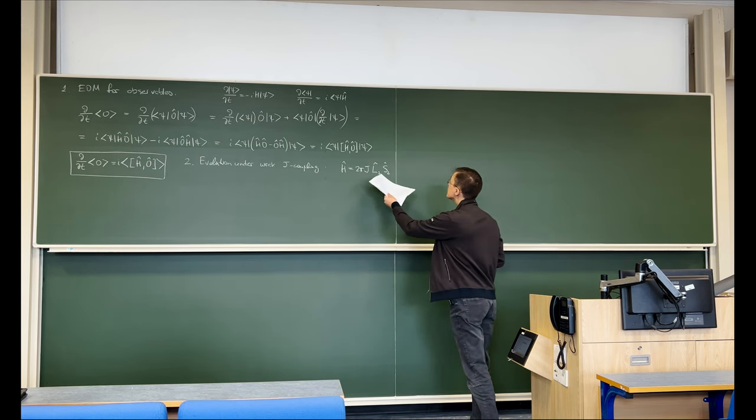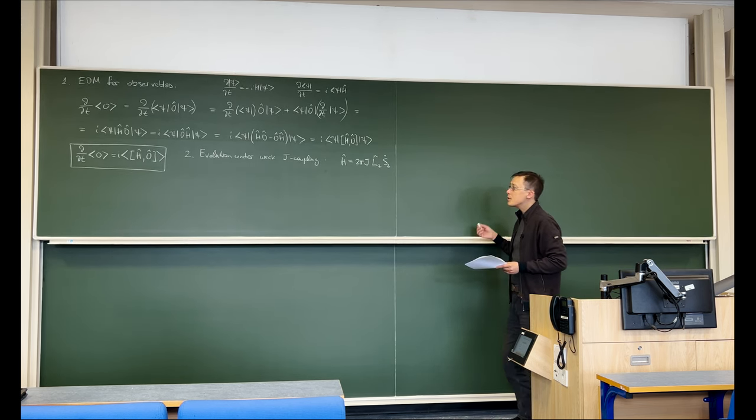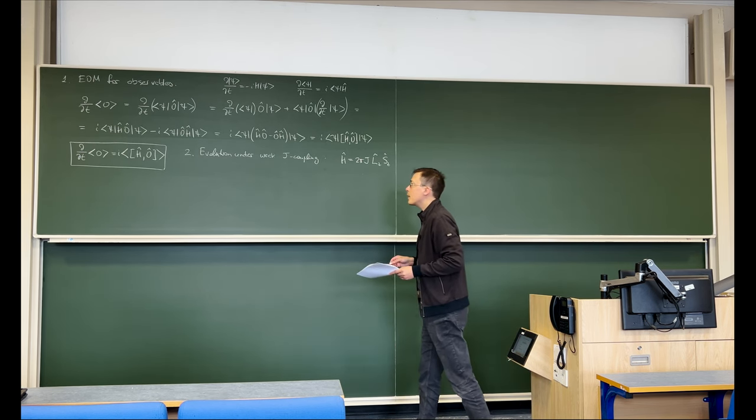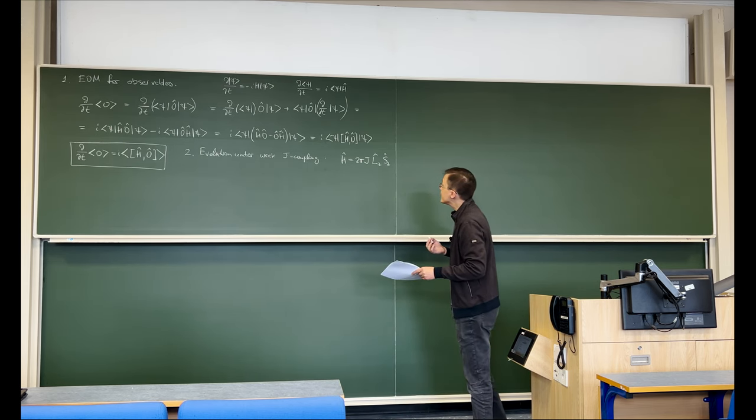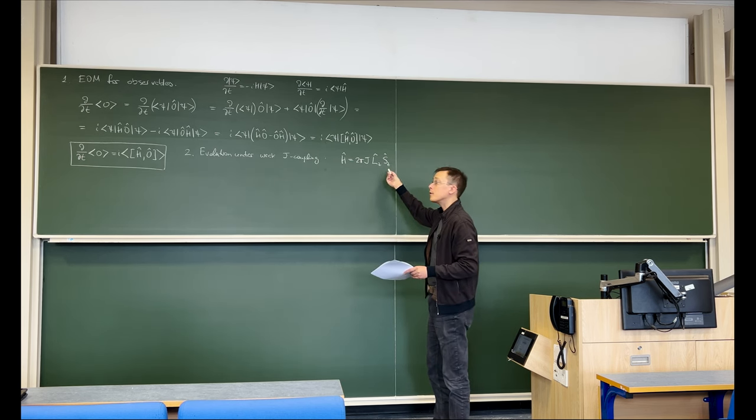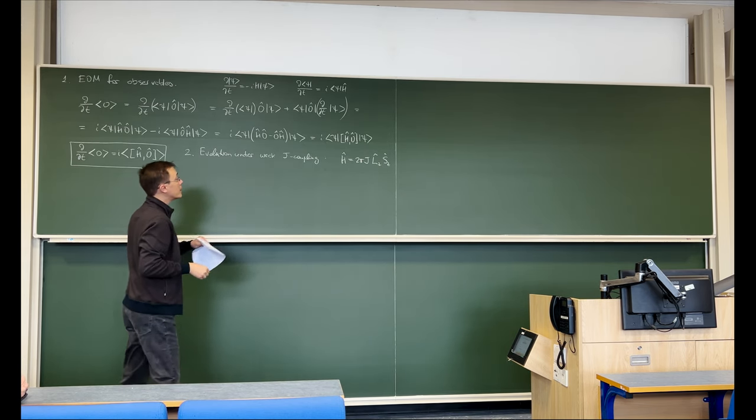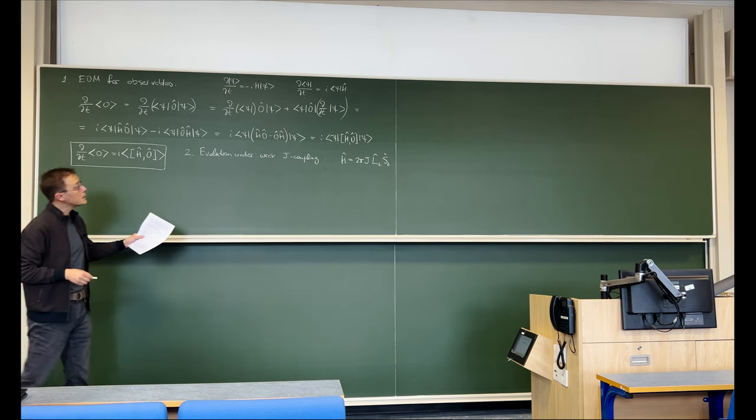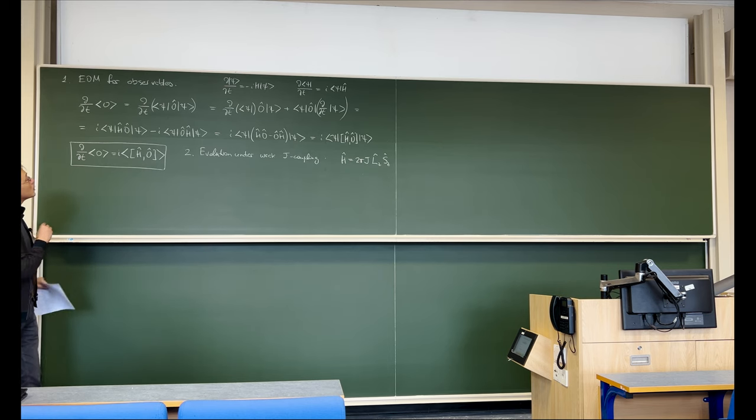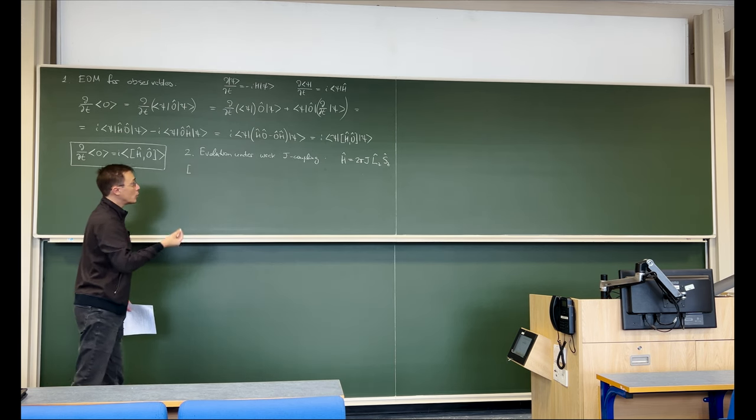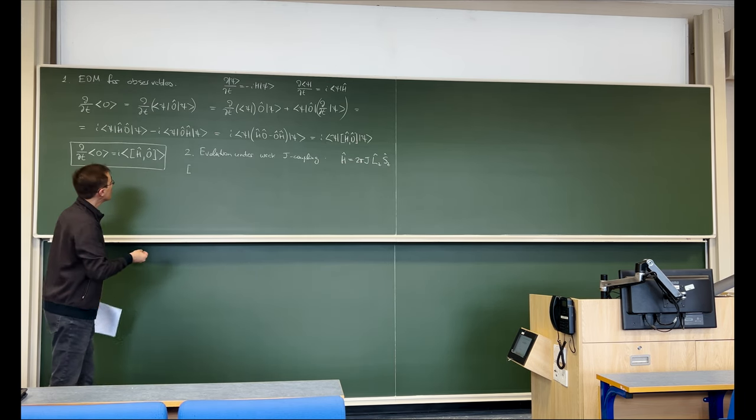So what we have is a Hamiltonian that is 2πJIzSz. So we have a 2-spin system, we have a J coupling between the 2 spins L and S, and we have this interaction term which we had discussed a few lectures ago. So let us now take a 2-spin system, let us assume that our rotating frames are precisely on resonance with respect to both spins, say a carbon and a proton, and the only thing that we are evolving under in the rotating frame is this. And then we would like to know what happens to magnetization when such an evolution takes place.